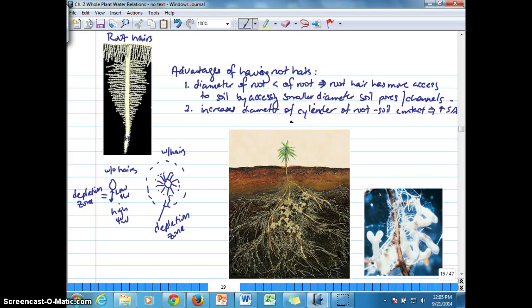We can see that we have an additional feature that can be attached to the root, which are called mycorrhizae. Mycorrhizae are basically where a fungus interacts with the root in a mutualistic symbiosis.